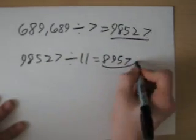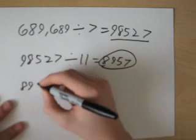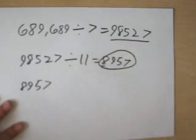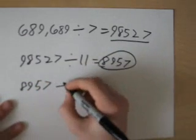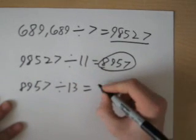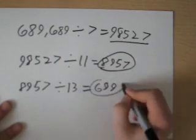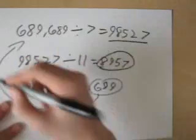Now you take this number, and you write that, and you divide this number by 13. And your result should be your original number.